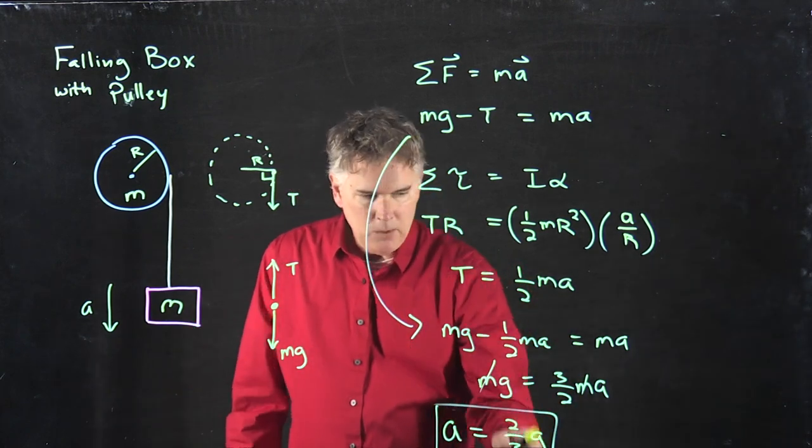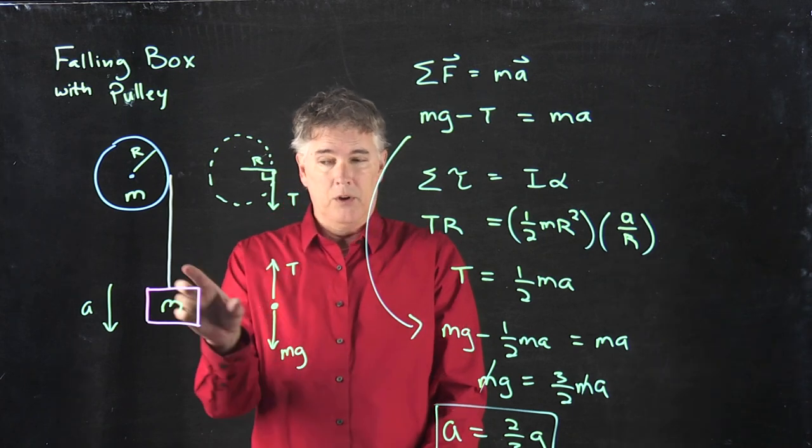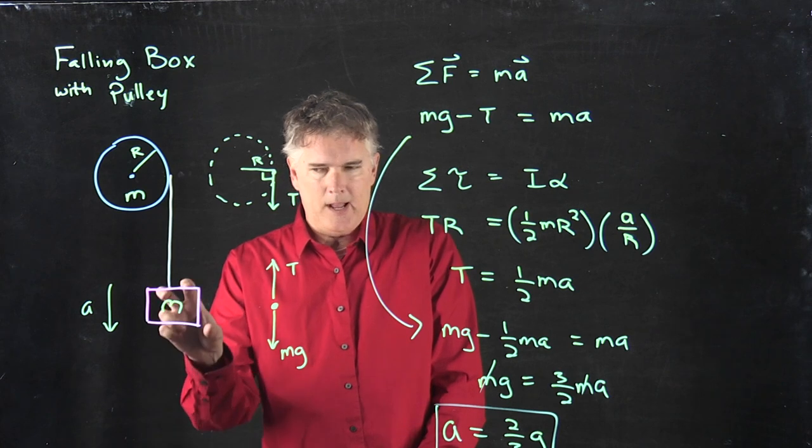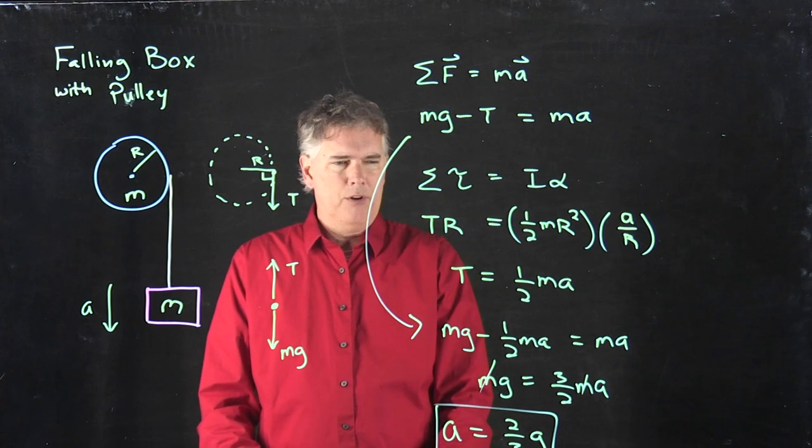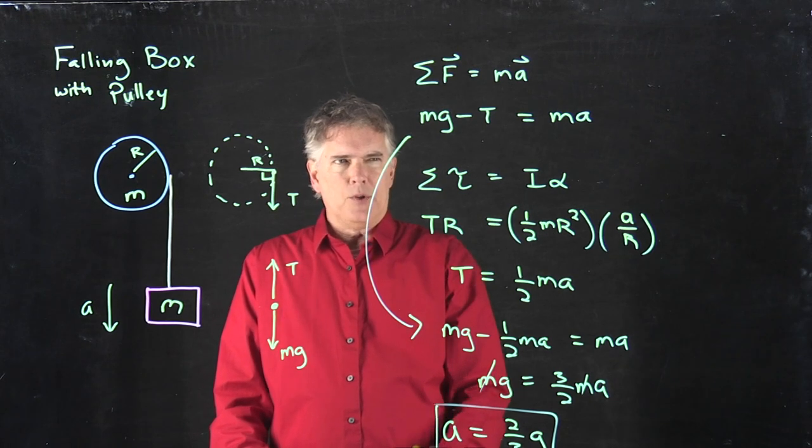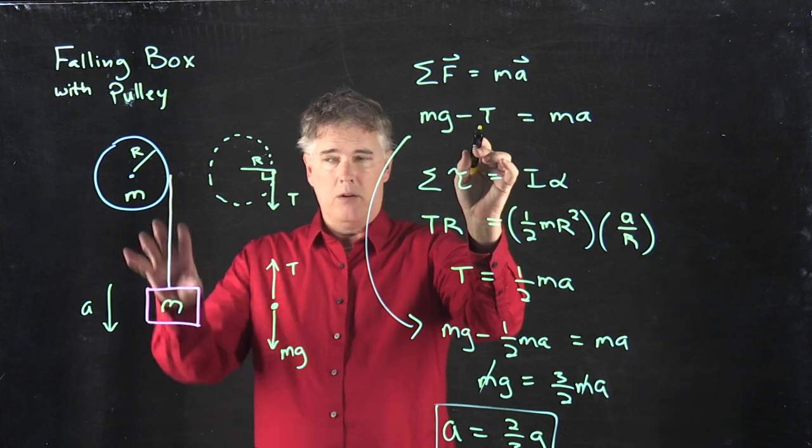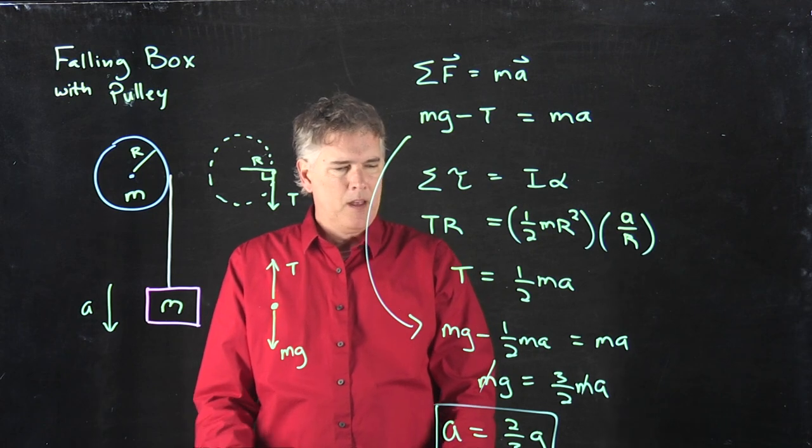So it's got the right units, meters per second squared. It is less than g, which is good. We know this thing has to fall at a rate less than 9.8 meters per second squared. Turns out it is two-thirds. And if you go back up to this equation right here and the tension was zero, like the disc was gone, you would get A equals g.